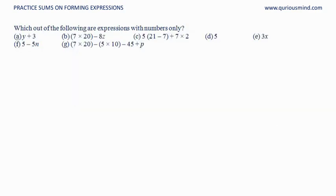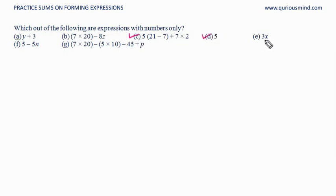Which of the following are expressions with numbers only? y plus 3 — y is a variable, so this is not what we are looking for. 7 into 20 minus 8z — z is a variable, so we are not interested in this. 5(21 − 7) + 7 × 2 — yes, that is an expression with numbers only. 5 is also with numbers only. 3x has x, a variable. 5 minus 5n — n is a variable. 7 × 20 − (5 × 10 − 45) + p — p is a variable, so not numbers only. So we have only two expressions with numbers only.